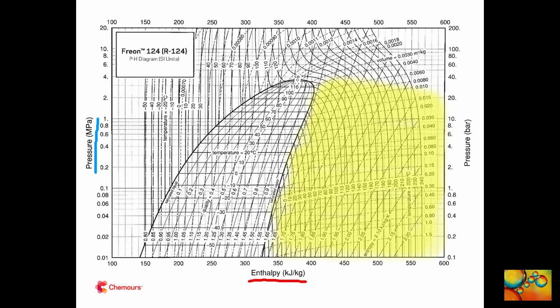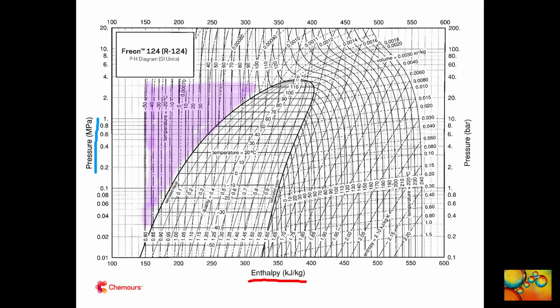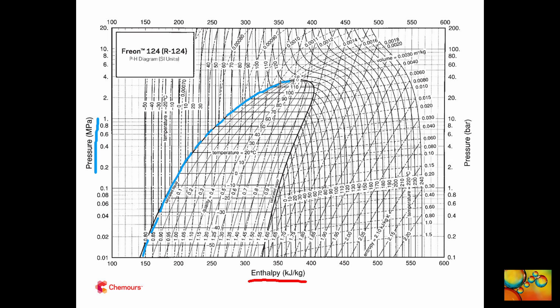This diagram has an additional set of lines, which are the lines of constant quality. Before discussing them, let's observe there is a dome in this diagram. To the right of the dome we have the superheated vapor region. To the left of the dome we have the region of subcooled or compressed liquid. Inside the dome we have systems with two phases: a vapor and a liquid phase. Separating the subcooled or compressed liquid from the two-phase region, we have the saturated liquid line. Separating the superheated vapor region from the two-phase region, we have the saturated vapor line. As we move to high pressures, the saturated liquid line and the saturated vapor line come closer and closer together, and they meet at the critical point of the pure substance.